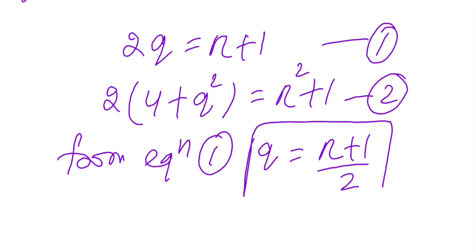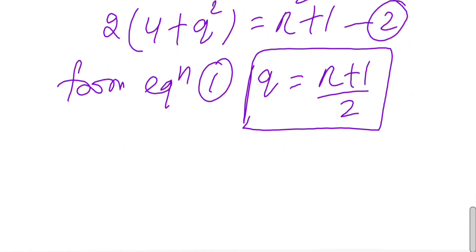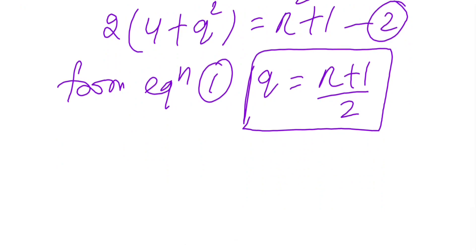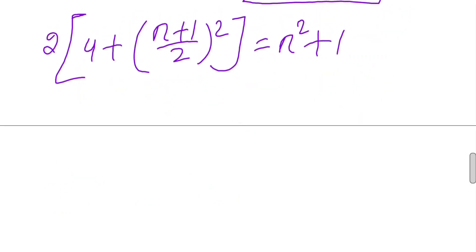Let's use this in equation 2. What will we get? 4 plus (r plus 1 over 2) squared equals r squared plus 1. And now solving this, simplifying this, will give us one quadratic equation: r squared minus 2r minus 15 equals 0.